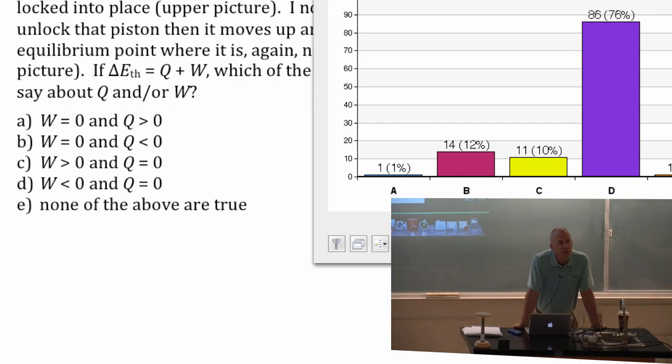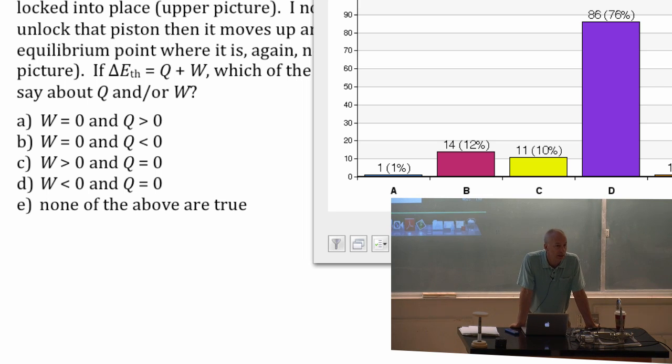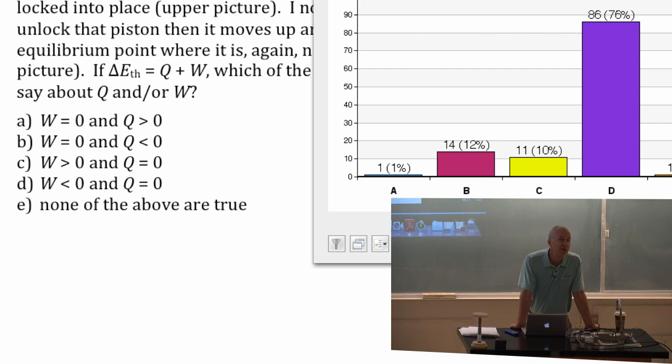W less than zero. W is the work energy transferred in. If energy was transferred out and we call it work, then W is a negative number, just like if heat energy is transferred out, then Q is a negative number.